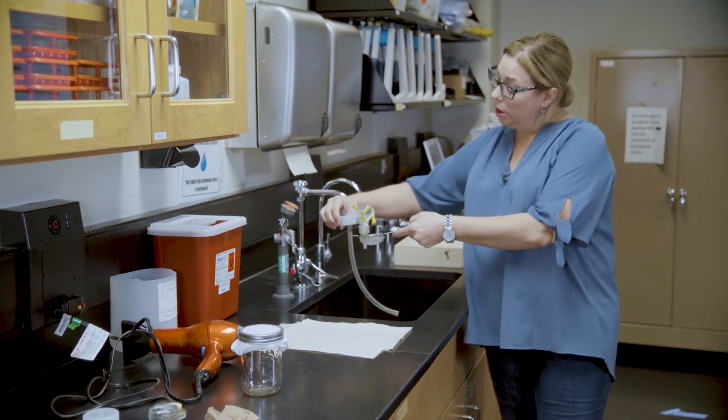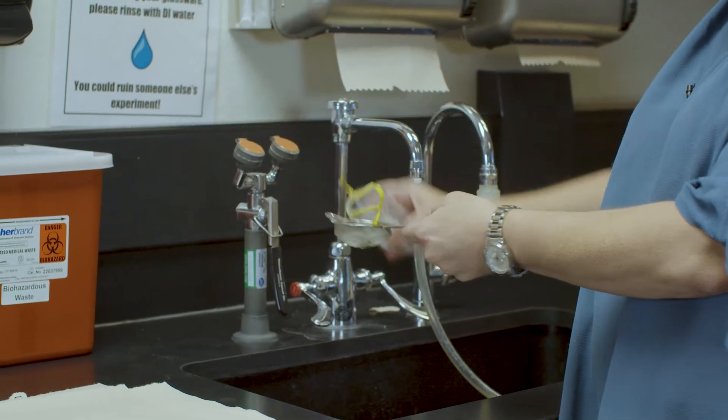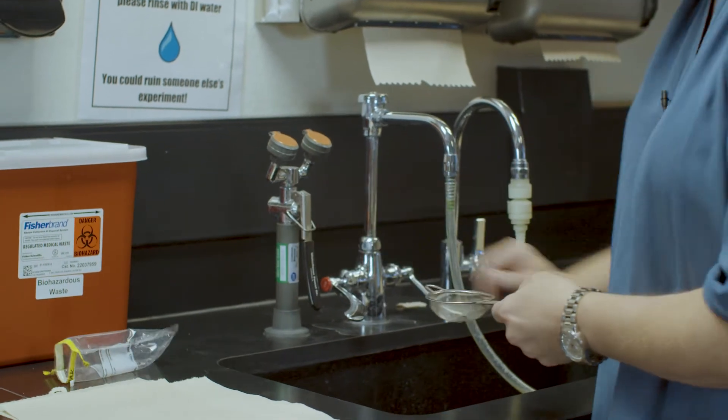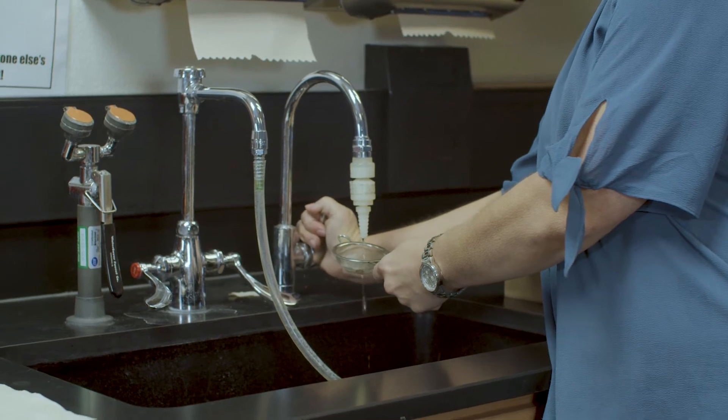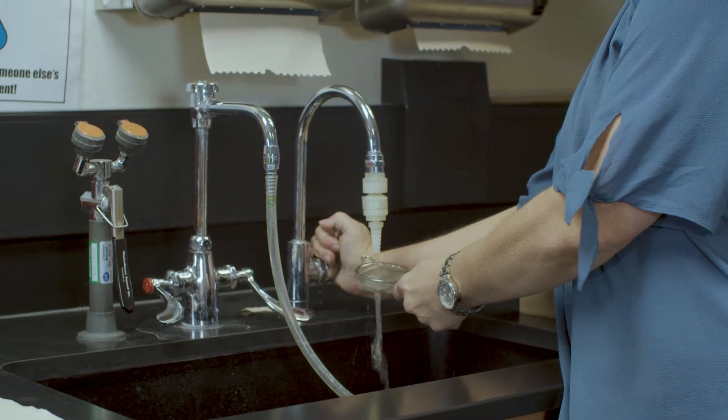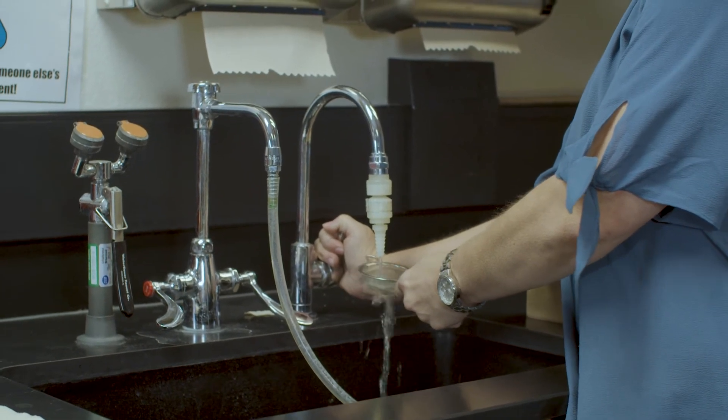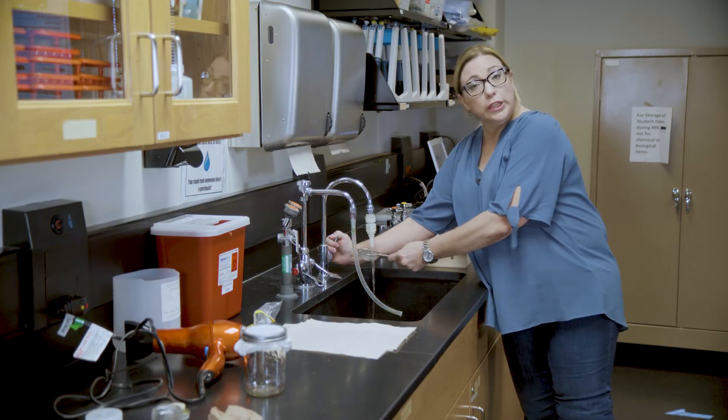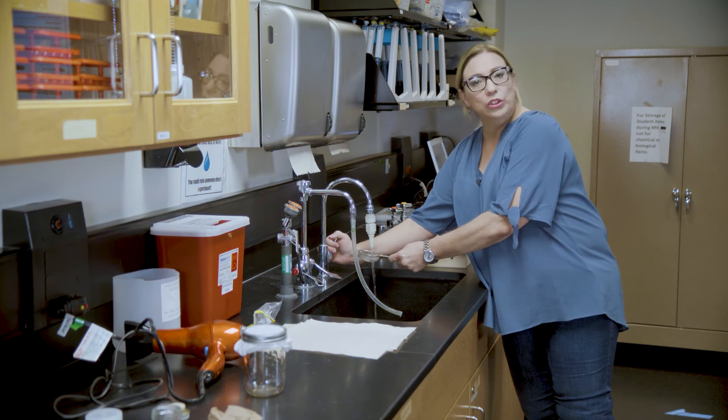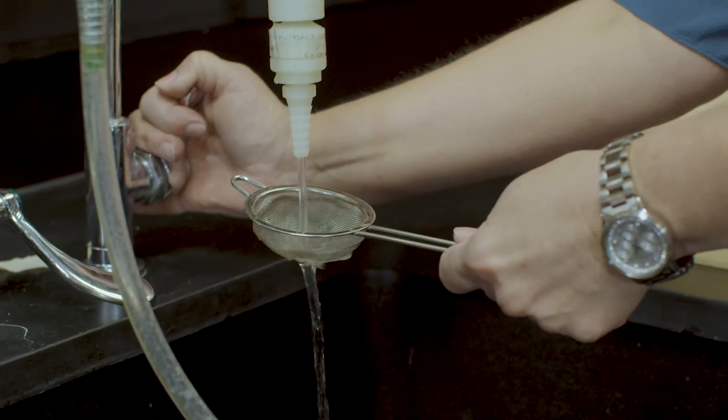You're going to pour the ethanol into your strainer. Now you have to rinse your bee. Remember that they are pretty pliable at this point. You just run a stream of water over your bee. Even if you're looking at pollen on your bee, it will not come off while rinsing.